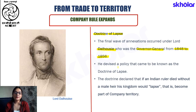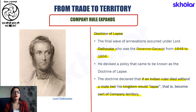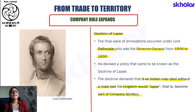Under this particular policy, it was declared that if any Indian ruler had died without a male heir, then their kingdom would lapse and become a part of the company's territory. It is important to note that an adopted heir was not considered the legal successor of any particular territory — it had to be a natural-born heir. Since many rulers died without natural heirs, a lot of territory came under the hands of the East India Company.